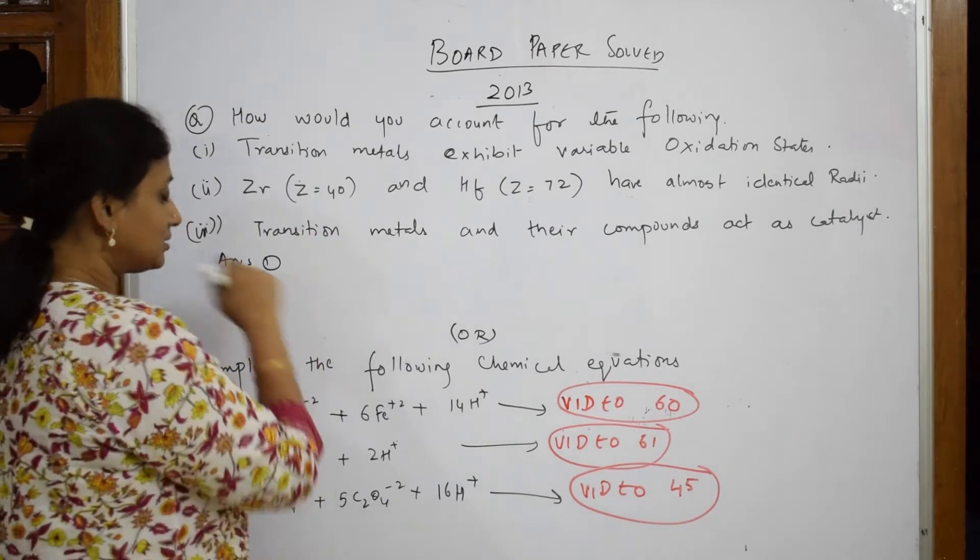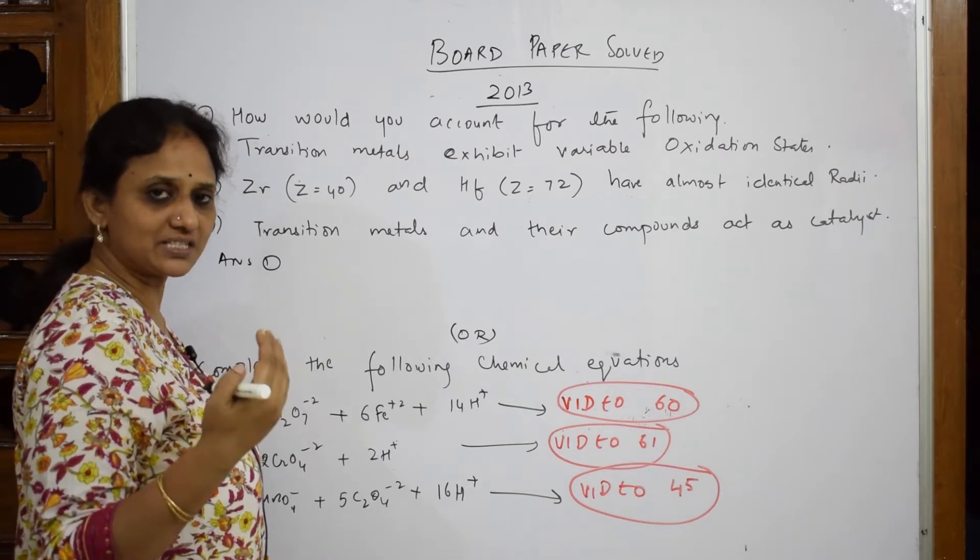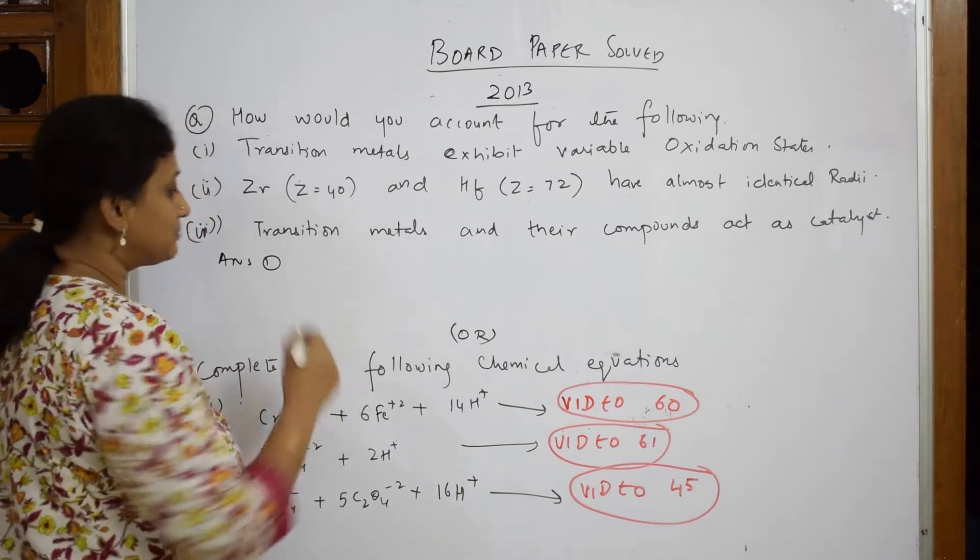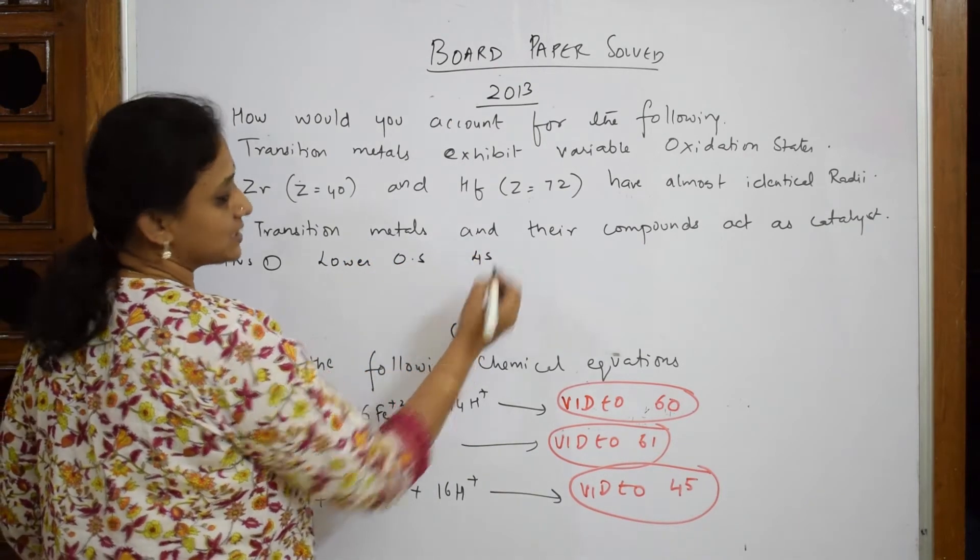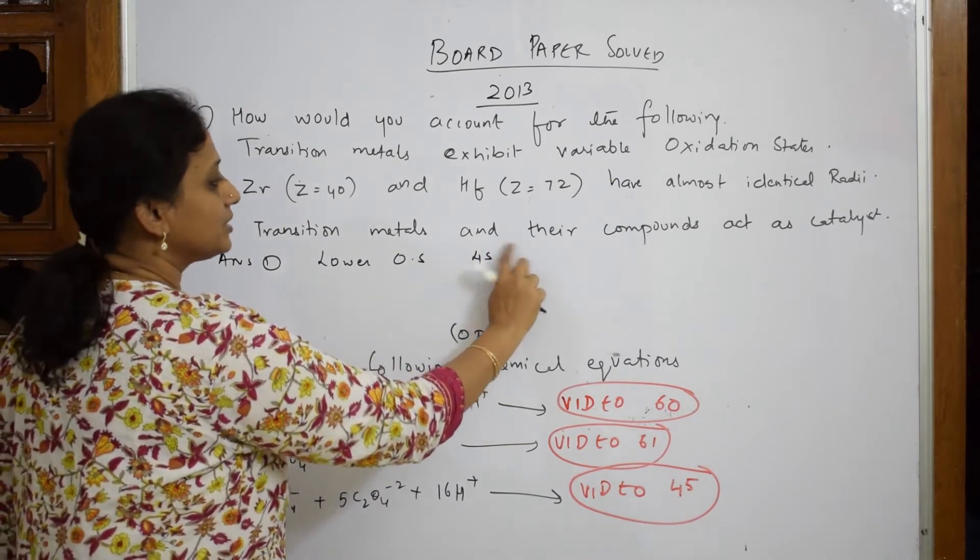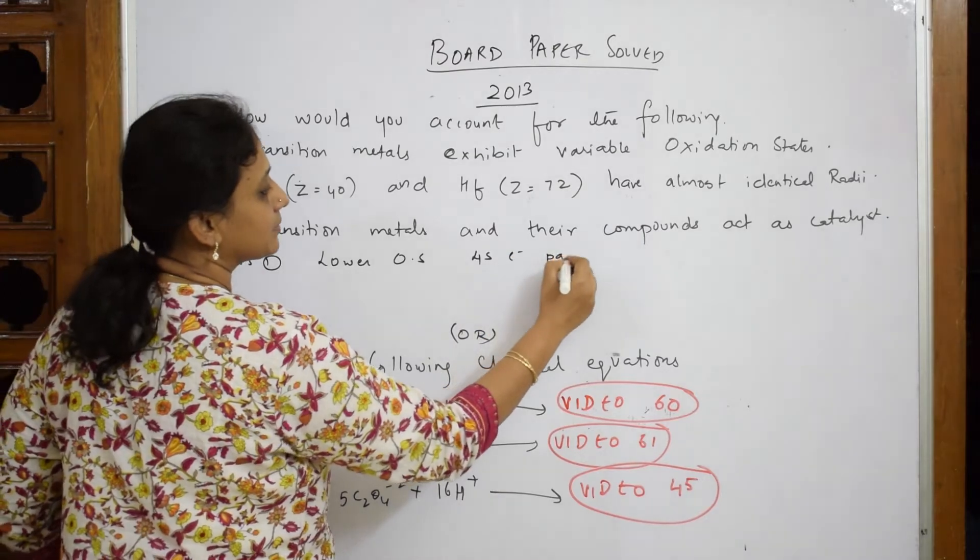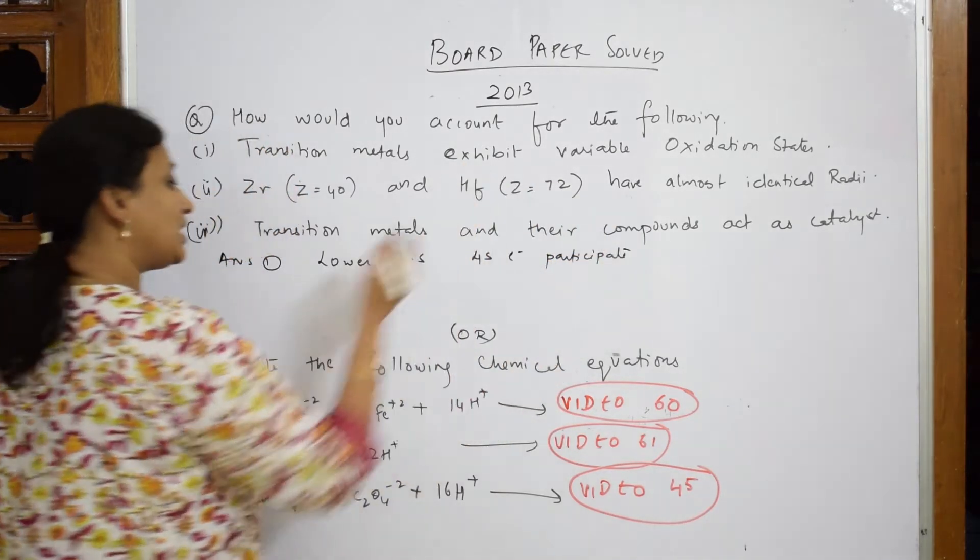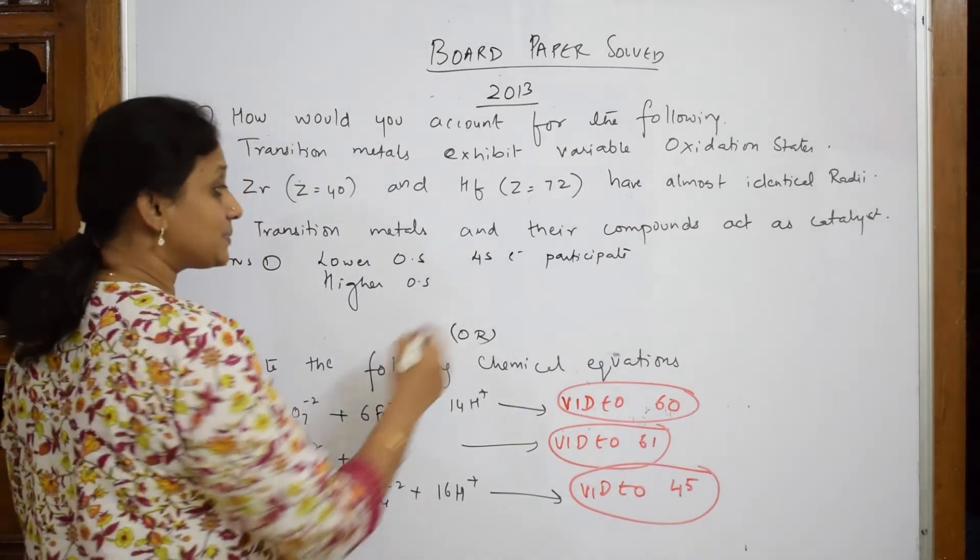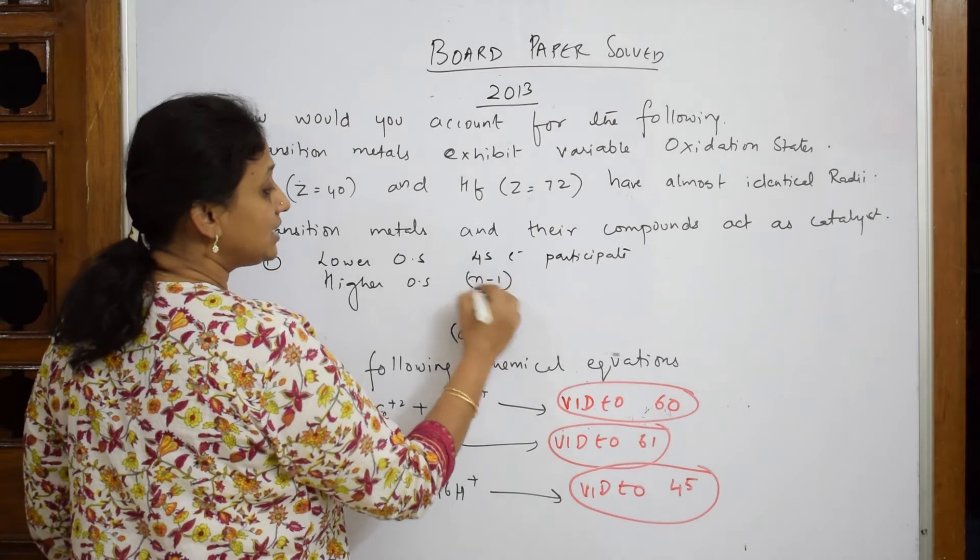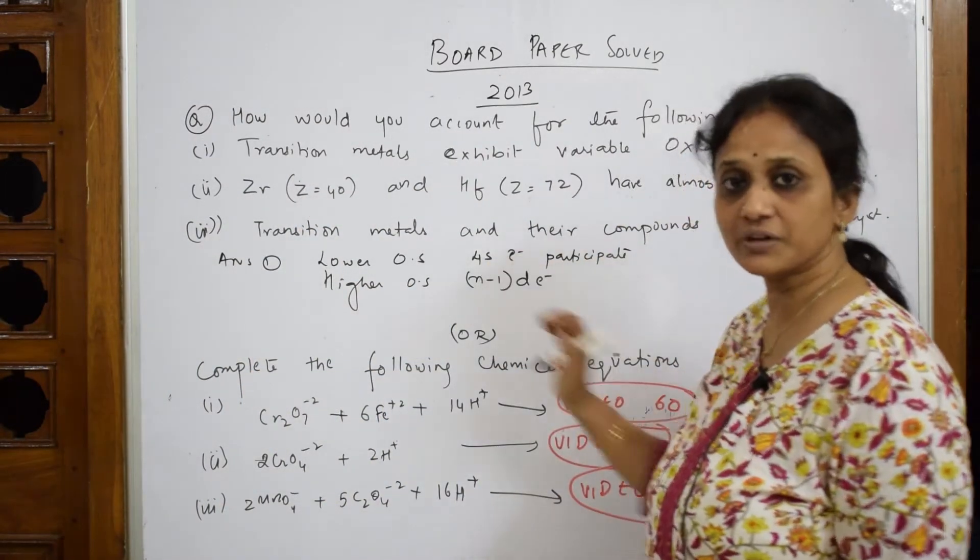Why do they exhibit variable oxidation state? Basically here, for the lower oxidation state like scandium, atomic number 21, for lower oxidation state we have 4s participating. When you are going to higher oxidation state, 4s electrons participate. When you reach higher oxidation state like manganese Mn plus seven, n minus 1 d electrons are participating. Now you started taking out electrons from your d orbital.